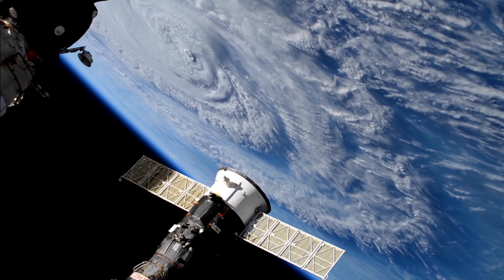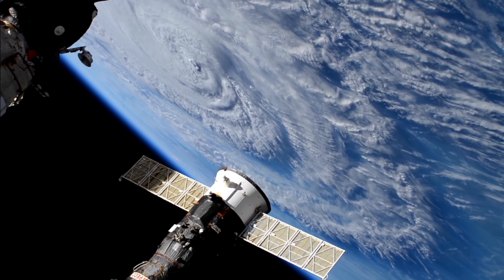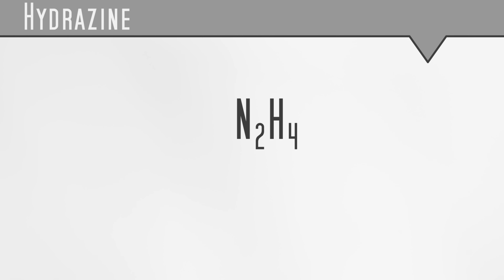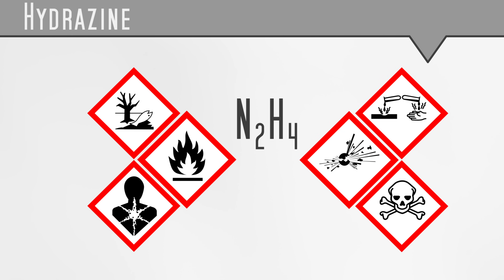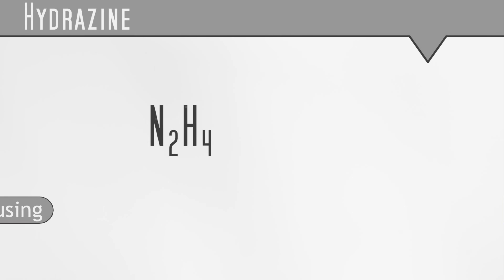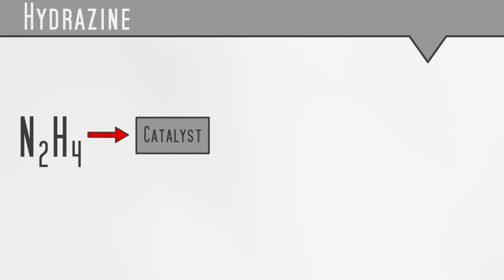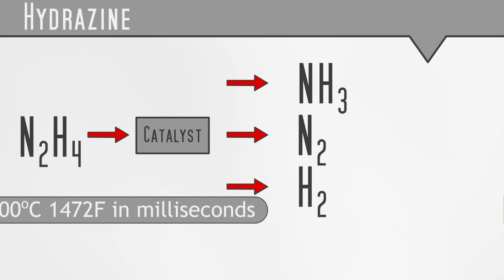The most popular monopropellant is hydrazine, with hydrogen peroxide having been used fairly regularly as well. Hydrazine is a wonderfully toxic compound, which will spontaneously explode given half a chance, and on top of all that, it's probably carcinogenic. However, when you pass it over a catalyst, it decomposes into ammonia, nitrogen and hydrogen, along with a tonne of heat.